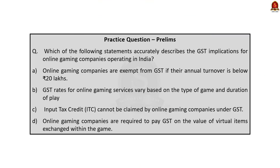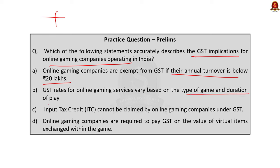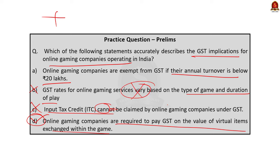Practice question: Which statement accurately describes GST implication for online gaming companies? Statement A: exempted if annual turnover is below 20 lakhs. Statement B: GST rates vary based on type of game and duration of play. Statement C: input tax credit cannot be claimed. Statement D: required to pay GST on value of virtual items exchanged within the game. The correct answer is option D. Statement C is false — input tax credit can be claimed. Statement B is false — GST rates do not vary by game type or duration. Statement A is incorrect — online gaming companies are not exempted below 20 lakhs.